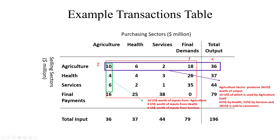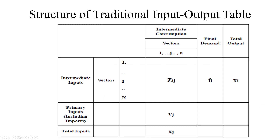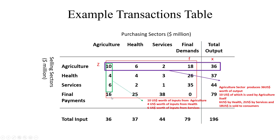Similarly, reading the green box — agriculture needs 10 U.S. dollars worth of input from agriculture, because while producing, agriculture needs its own products. Then 4 U.S. dollars worth of input comes from health, and 6 U.S. dollars worth of input from services. Primary inputs include imports and labor salaries. When you sum the first row the total output is 36, confirming that total input equals total output.